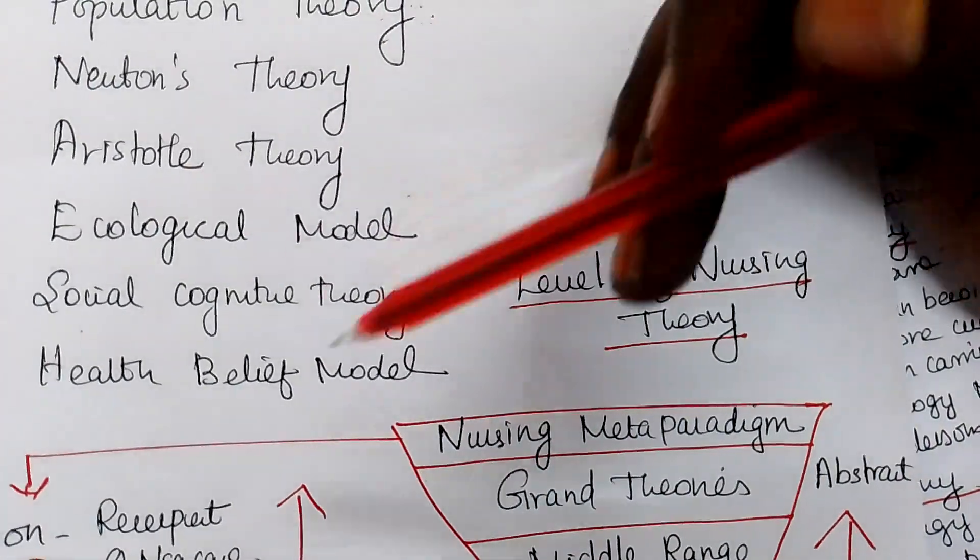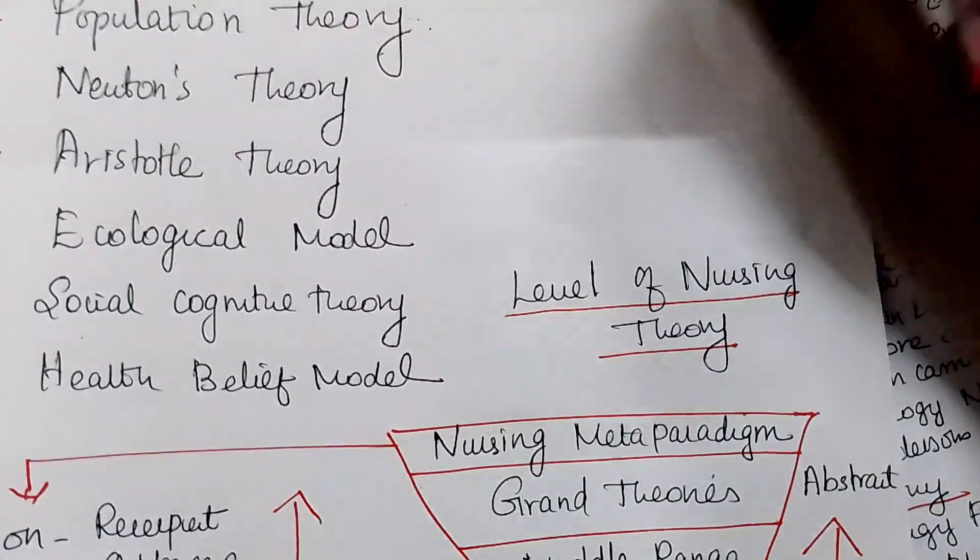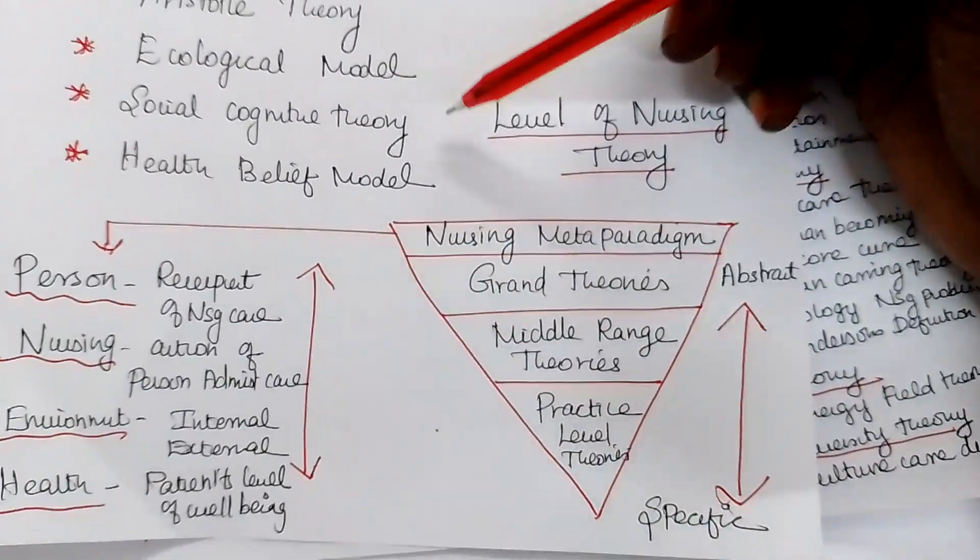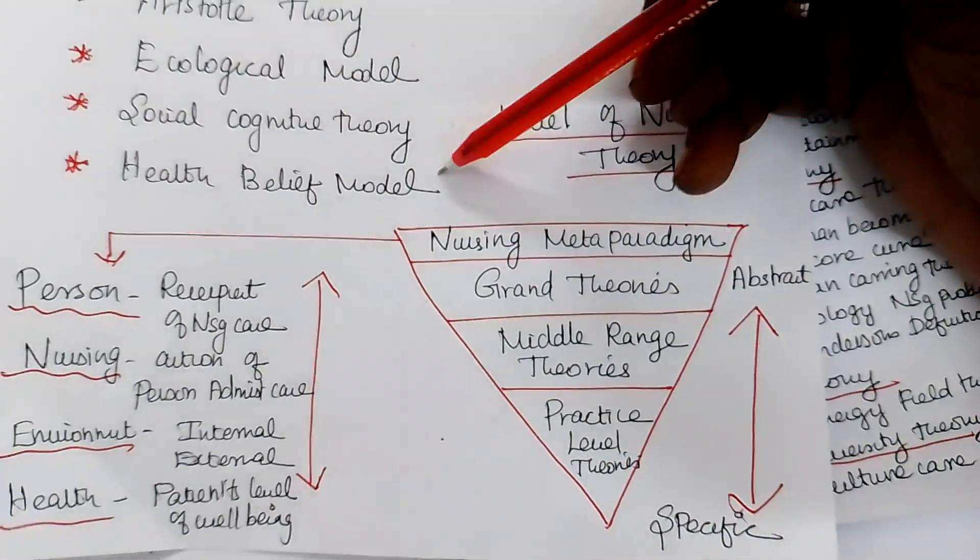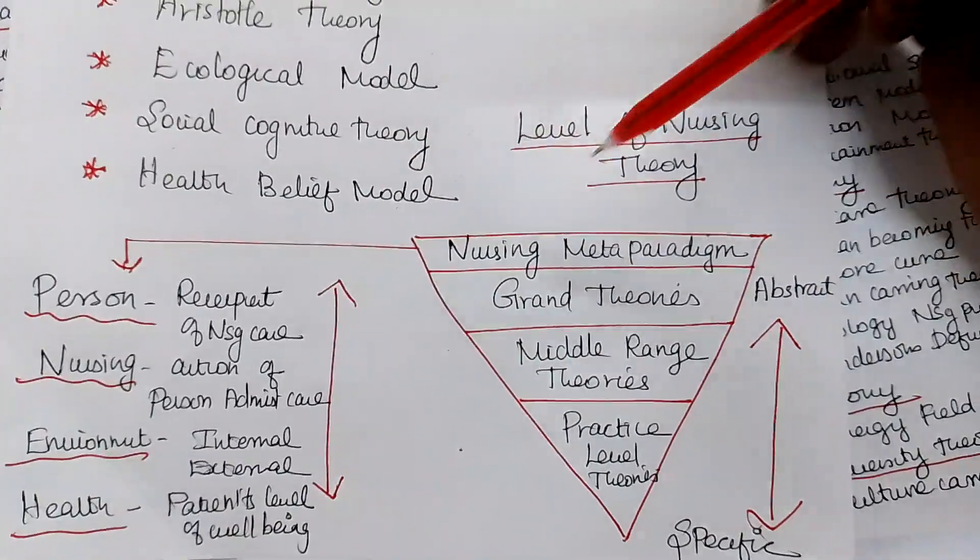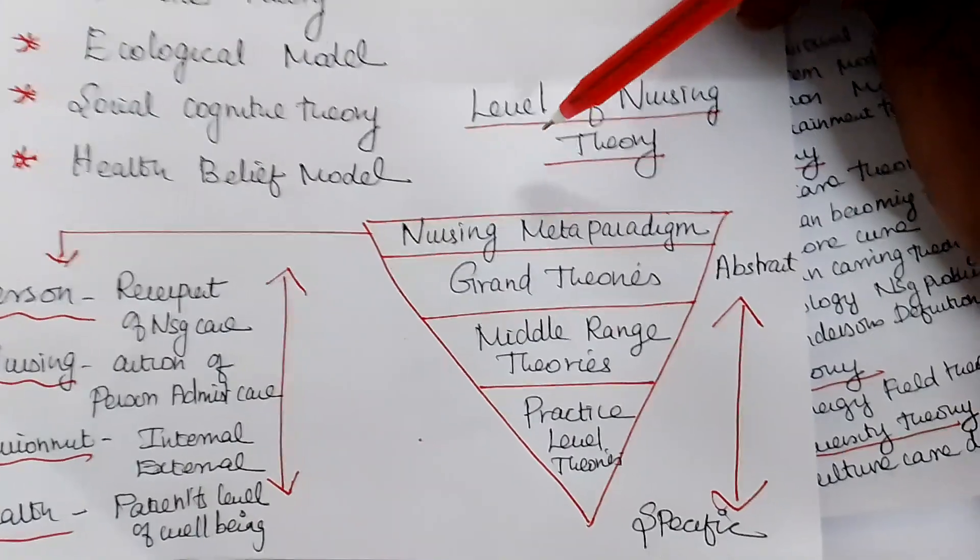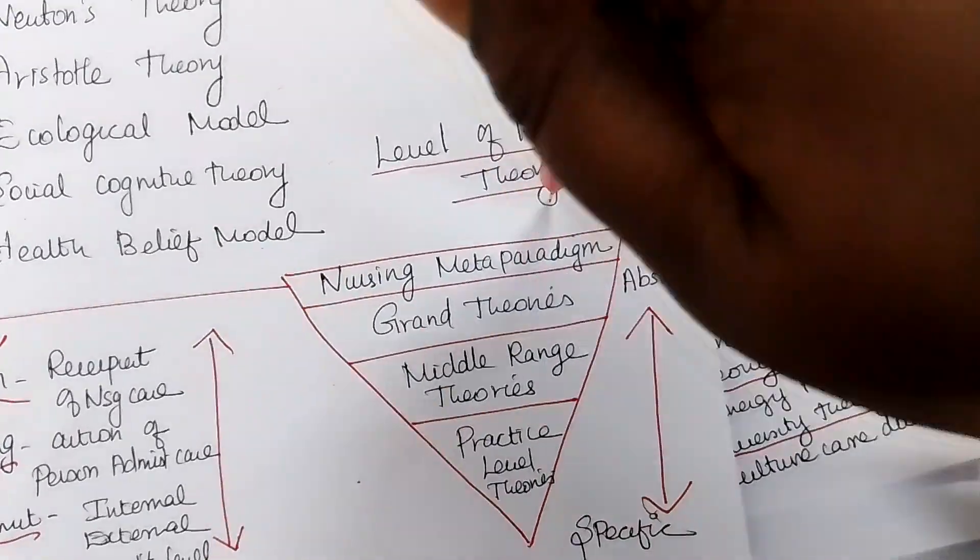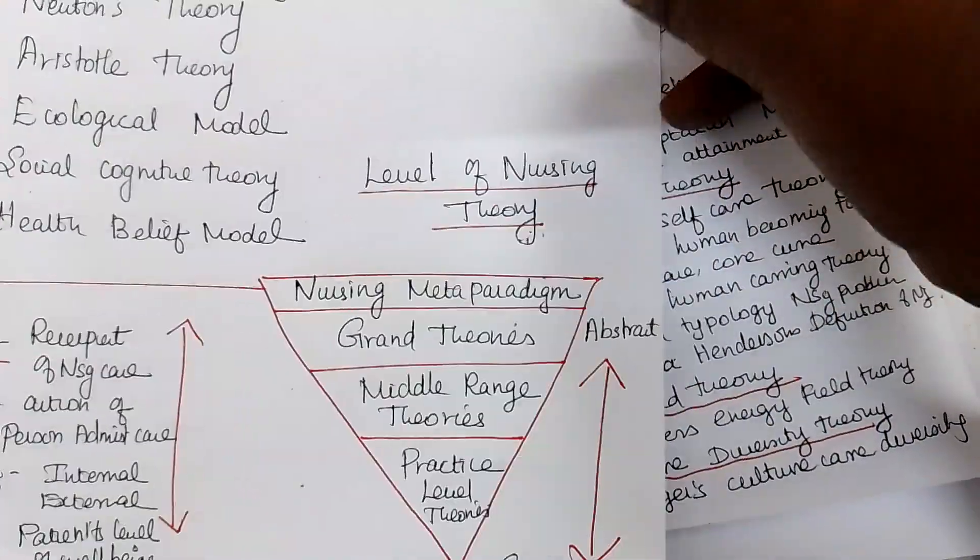Sometimes ecological model, ecological theory, Newton's theory, Aristotle theory, social cognitive theory. Some model, health belief model. So whatever it may be, they were telling about this one. So various health and disease theories or their physics, they have a theory. What about the nursing? What is the level of nursing theories?